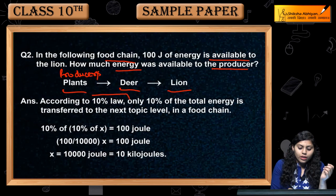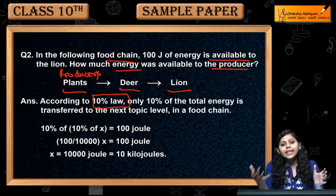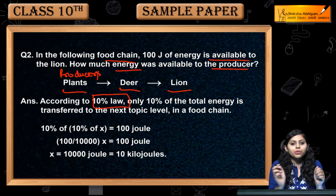Now we will apply the 10% law. According to the law, producers transfer energy to the next trophic level. How much energy? 10% of the producer's energy is transferred.